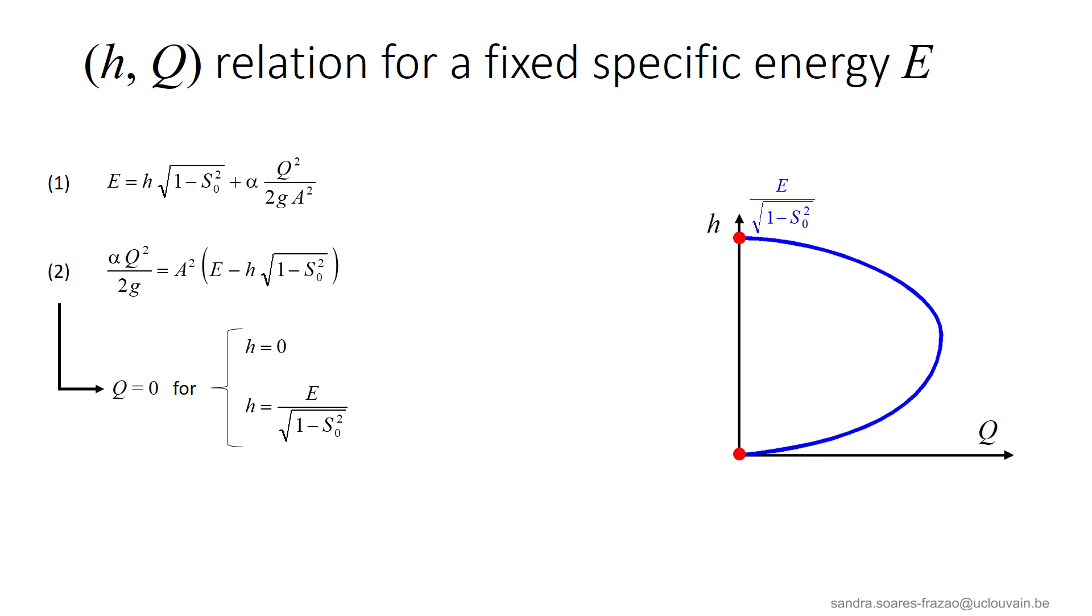The definition of the specific energy in equation 1 can be rewritten like here in equation 2, showing that the discharge is equal to zero for these two values of the depth. So in an H-Q plot, this corresponds to the two red points, which indicates that the curve between these two points should present a maximum discharge for a certain depth.